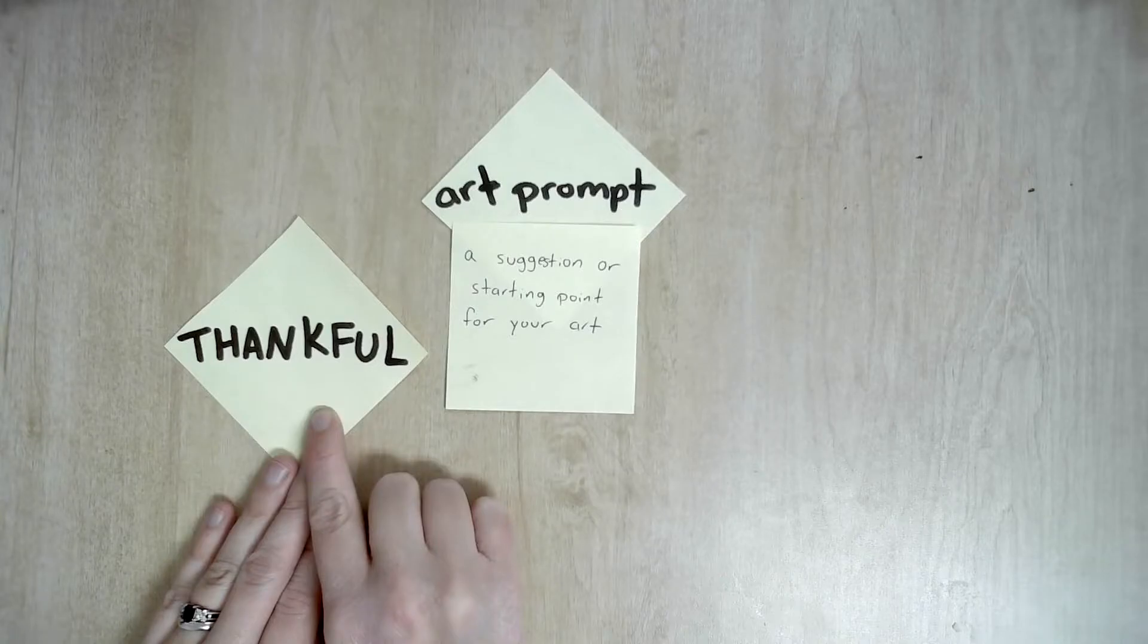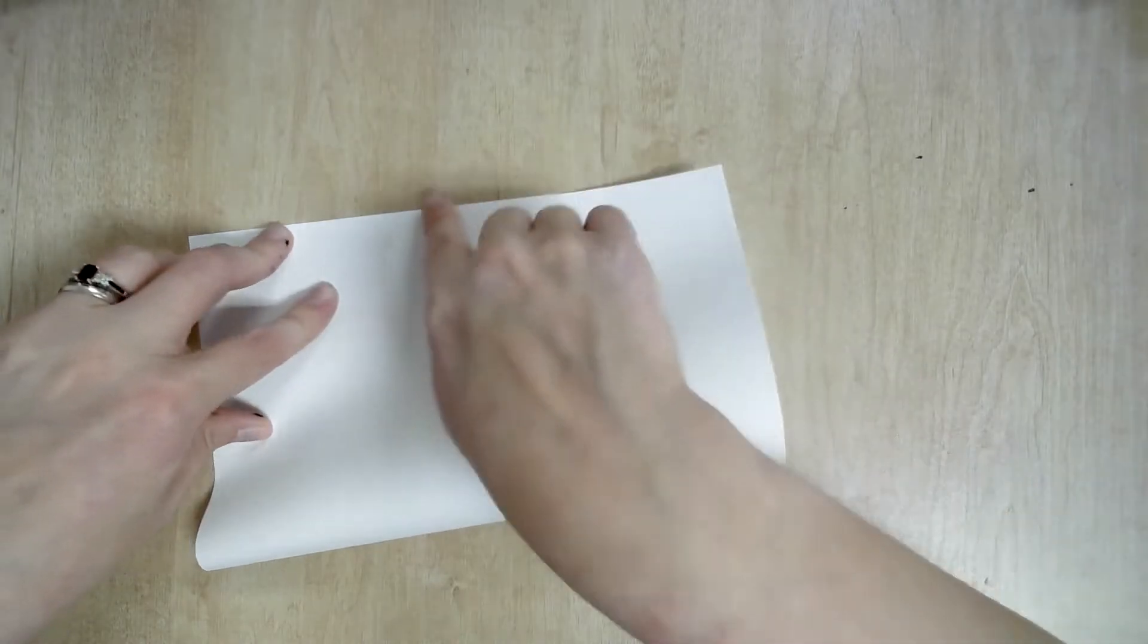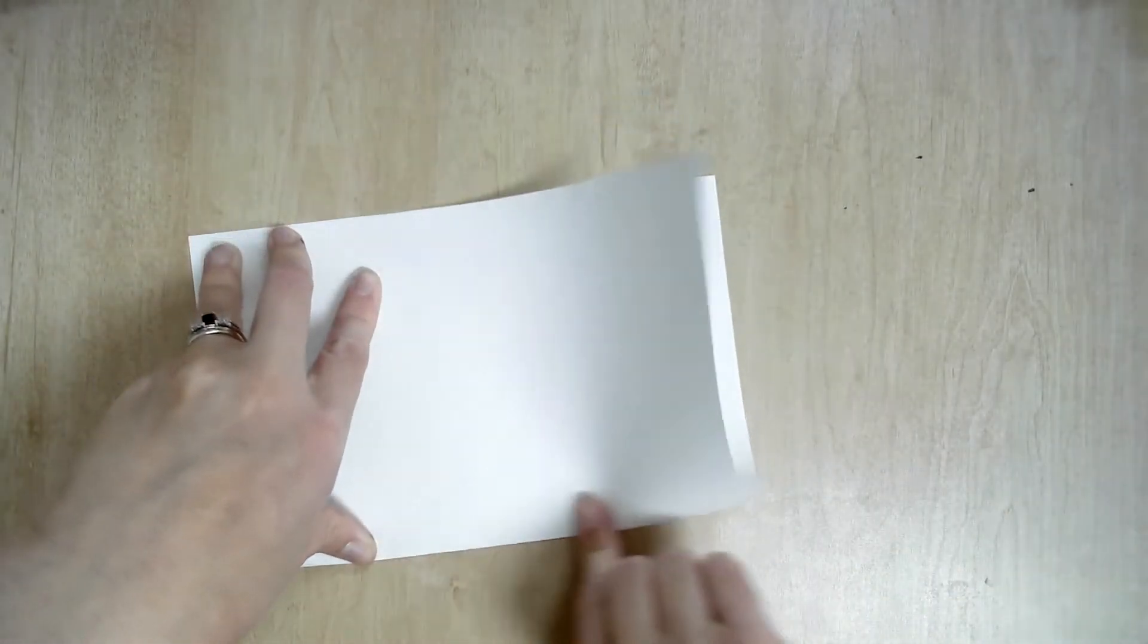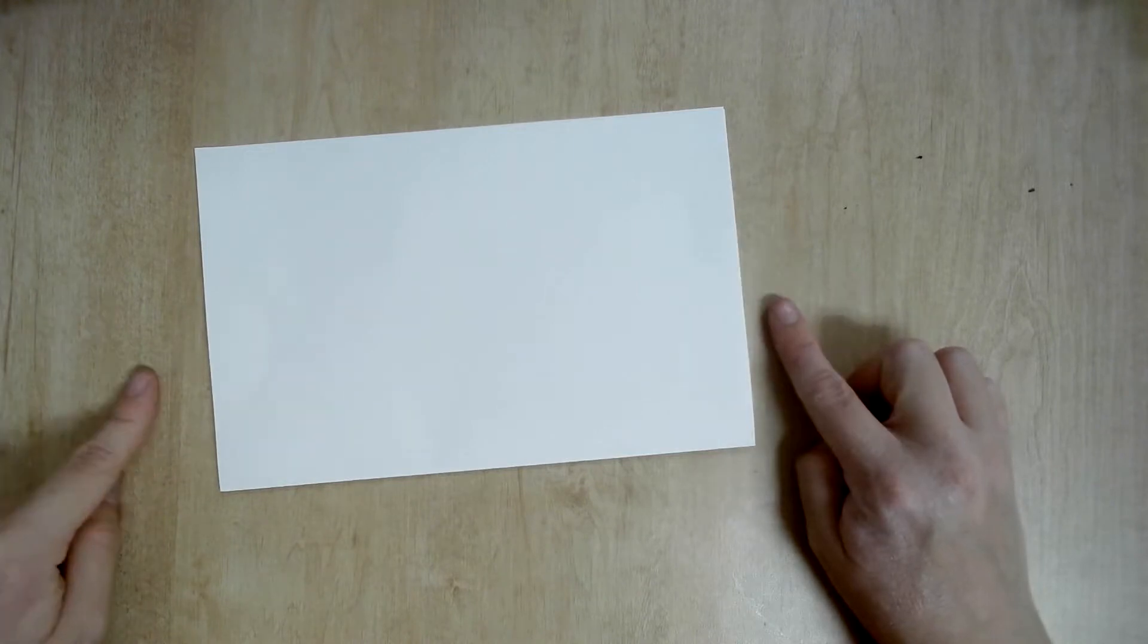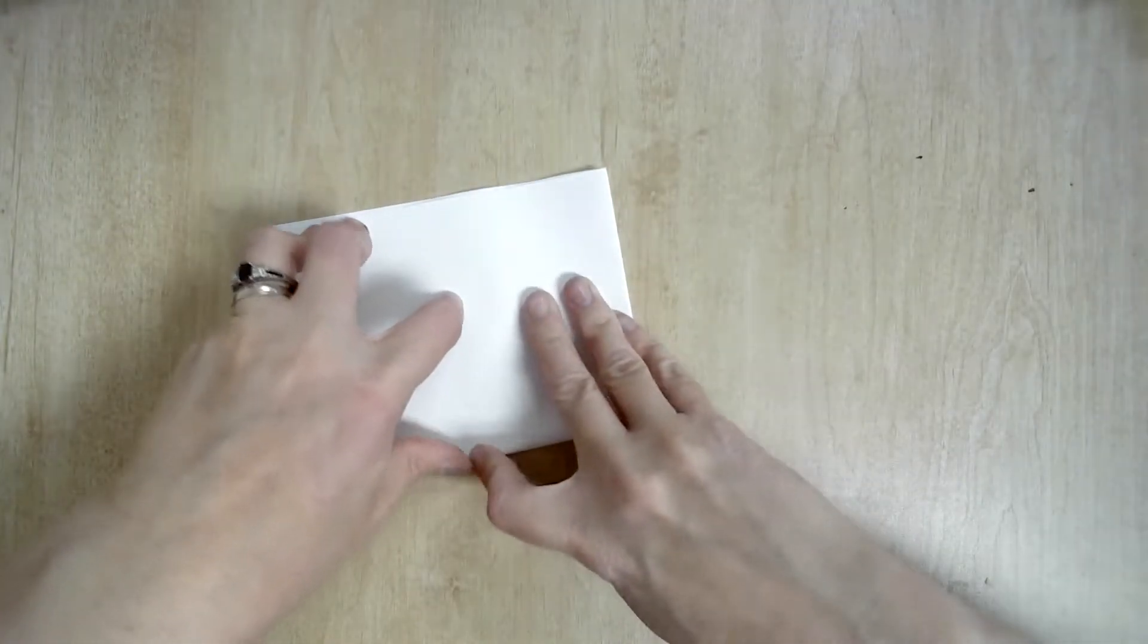You will have a sheet of paper. You're going to fold it short side to short side. After you make the sides hold hands, you're going to crease it. And now once again you're going to fold it short side to short side, hold hands, and then crease.